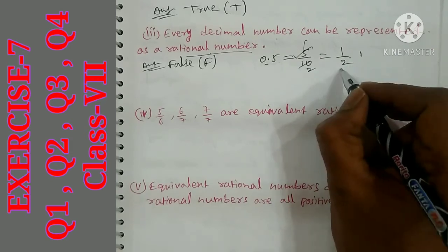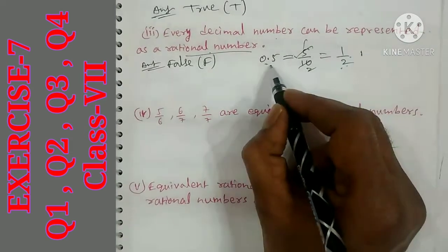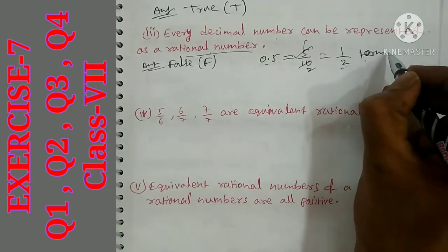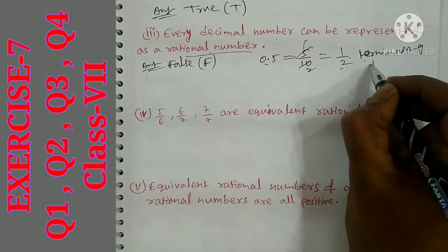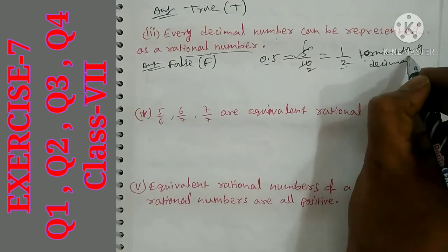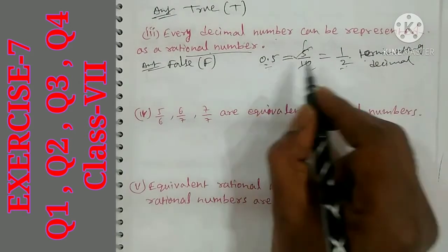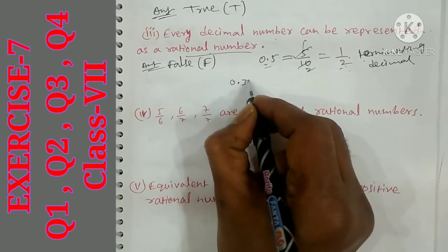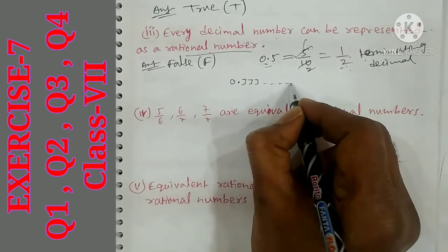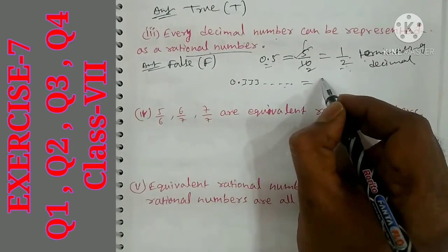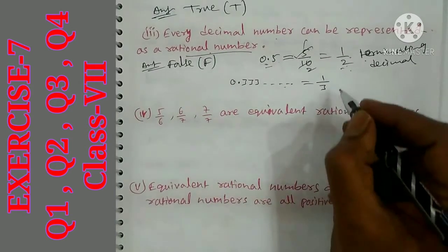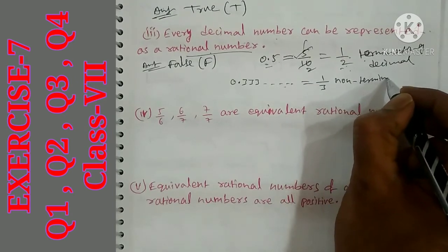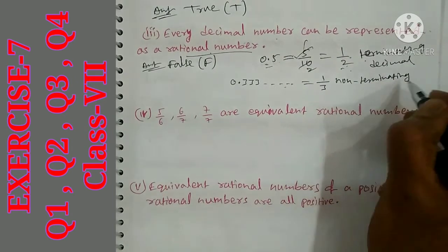A terminating decimal can always be expressed as a rational number. A non-terminating repeating decimal can also be expressed as a rational number. So the statement that every decimal number can be represented as a rational number is true.